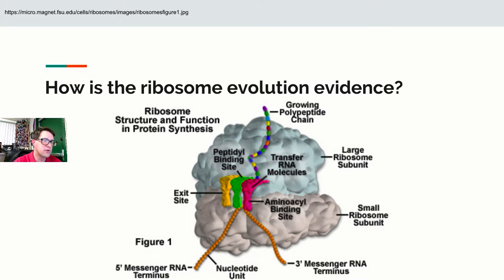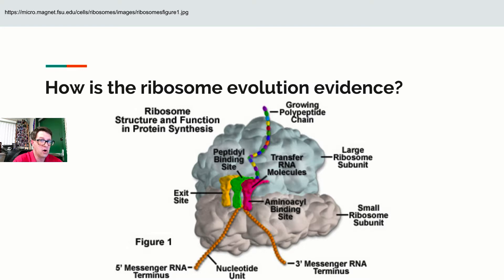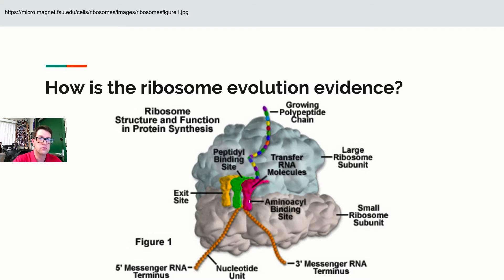The ribosome is composed of two pieces — a large and a small subunit — and contains both RNA and protein. If you remove the protein it still works, but if you remove the RNA nothing happens; the RNA is essential for function. The ribosome has three binding sites in the middle: the aminoacyl site (A site), the peptidyl site (P site), and the exit site (E site) — or APE for short. The A site is where new tRNA is added, the P site is where the peptide bond is made, and E is the exit point.